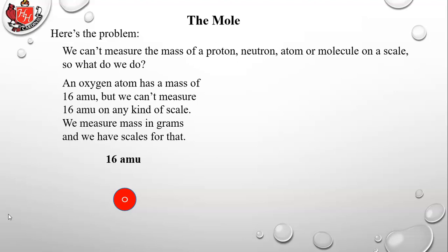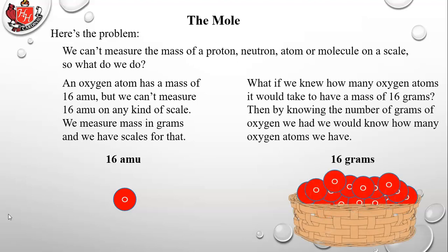A gram is roughly the mass of one of the larger-size paper clips — not a big clasp clip, but the larger-size paper clip. That's about one gram; it's not very heavy, but it's enough to measure. We know from the periodic table that oxygen has a mass of 16 amu — that's the atomic mass, the number on the bottom of the element box.